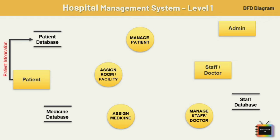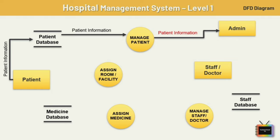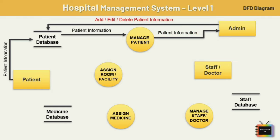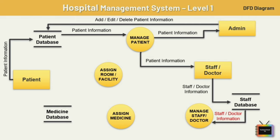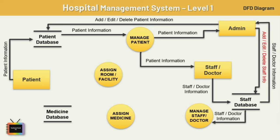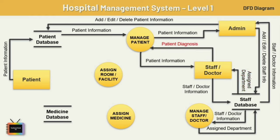First, the patient will add patient info into the database, which is shared with the manage patient process. This process sends patient info to admin, who can add, edit, and delete patient entries, and also sends patient info to staff and doctors. Similarly, staff and doctor info is stored in the database, sent to the manage staff and doctor process, then forwarded to admin. Admin has the right to add, update, and delete staff info. Staff or doctor will also send patient diagnosis info to the patient management process, which stores it in the patient database so the patient can access it.